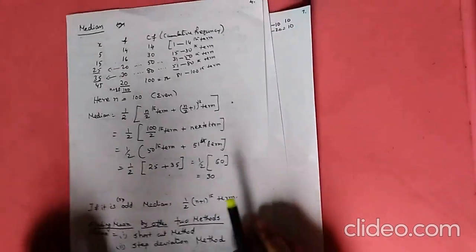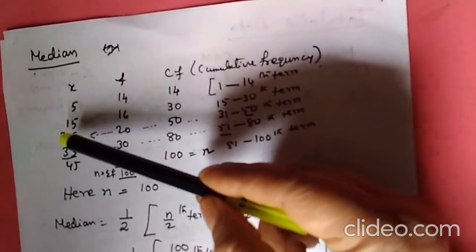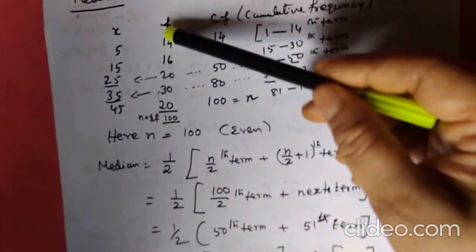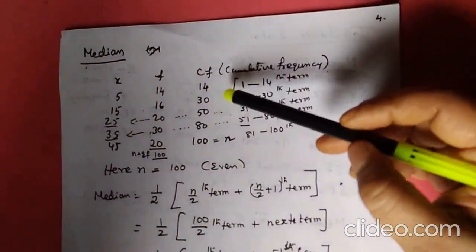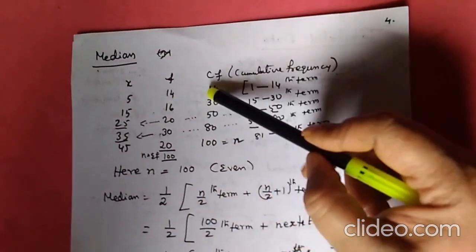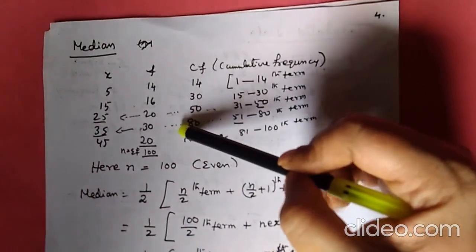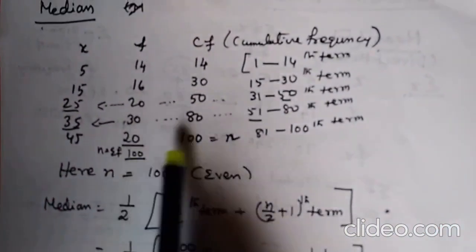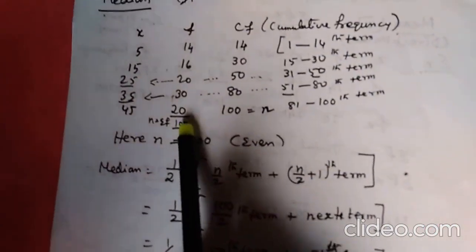Now come to the median for the same tabulated example: x values 5, 15, 25, 35, 45 with frequencies 14, 16, 20, 30, 20. Sigma f = 100. Now find the cumulative frequency: 14; 14+16=30; 30+20=50; 50+30=80; 80+20=100. The last cumulative frequency equals sigma f = n = 100.